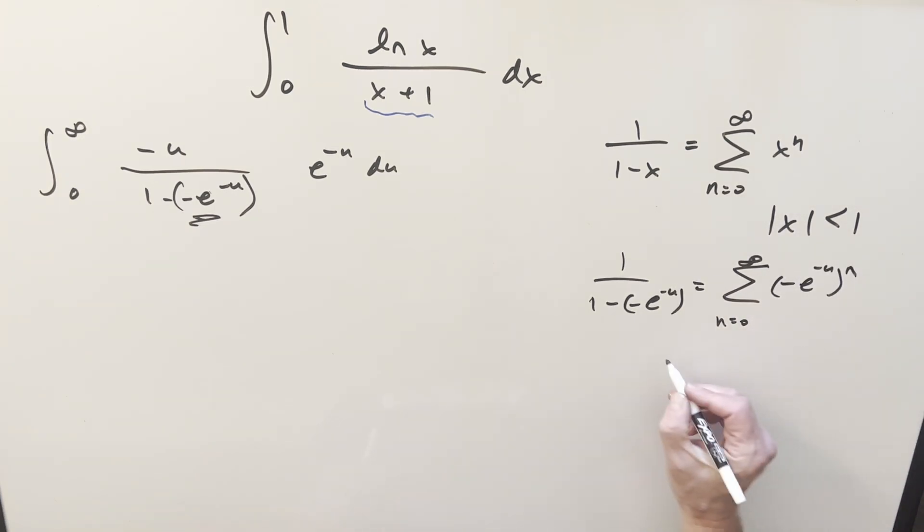So for our convergence on it, we need absolute value e minus u to be less than one. Minus sign doesn't matter inside the absolute value. The reason this is going to work is you just look at our bounds. Everything's positive going to infinity. When it's going to infinity, it's going to zero. Technically at zero it's one, but we don't really care about at zero. So this is going to work. All these values are going to be less than one.